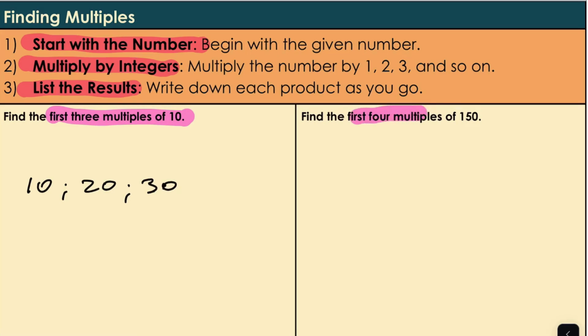What about our next question? The first four multiples of 150. So 150 multiplied by 1. 150 multiplied by 2. 150 multiplied by 3. 150 multiplied by 4. And there we have our first four multiples of 150.